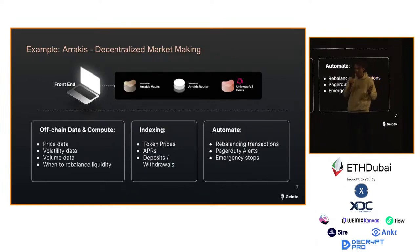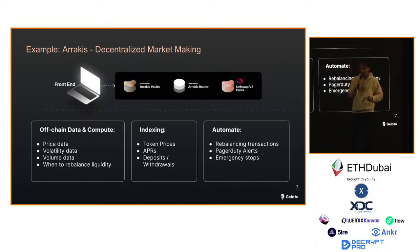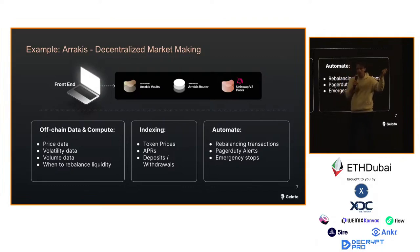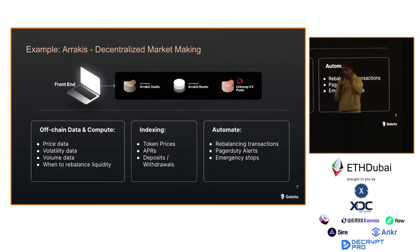A simple example from one of our spin-off projects Arrakis Finance — this does automated liquidity management and decentralized market making on Uniswap v3. It basically rebalances token liquidity around the price for concentrated liquidity management. In the back-end there's so much stuff happening: off-chain data and compute, price data being fetched, volatility data, volume data, data on when to rebalance liquidity, indices of token prices, APRs — not just for the back-end but also for the UI and analytics — and then you have automation to automatically rebalance the pool, that's the whole point of Arrakis, using Gelato for example.